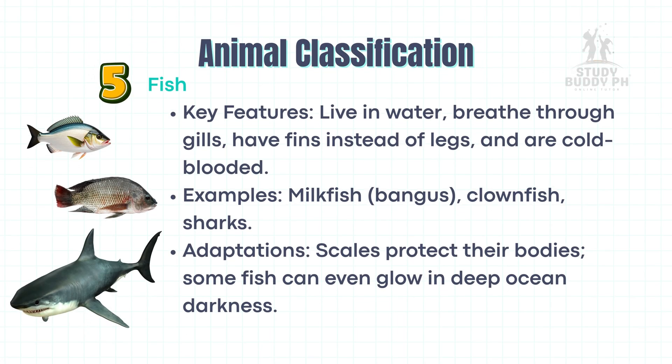Fish: Key features — live in water, breathe through gills, have fins instead of legs, and are cold-blooded. Examples: milkfish (bangus), clownfish, sharks. Adaptations: scales protect their bodies, and some fish can even glow in deep ocean darkness.